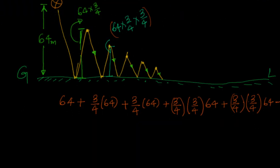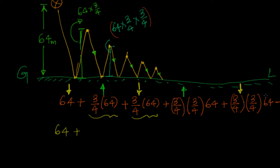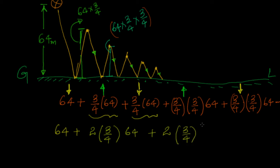Now if I simplify: this is 64 plus (3/4)×64 going down, then (3/4)×64 coming down, then rebounding (3/4)×64, again rebounding 3/4 of that. You can see that every time the ball touches the ground, before it touches the ground it goes for 2 times the rebound — it has to go up and come back down. So I can write this as 2 × (3/4) × 64 plus 2 × (3/4) × (3/4) × 64, and this continues.